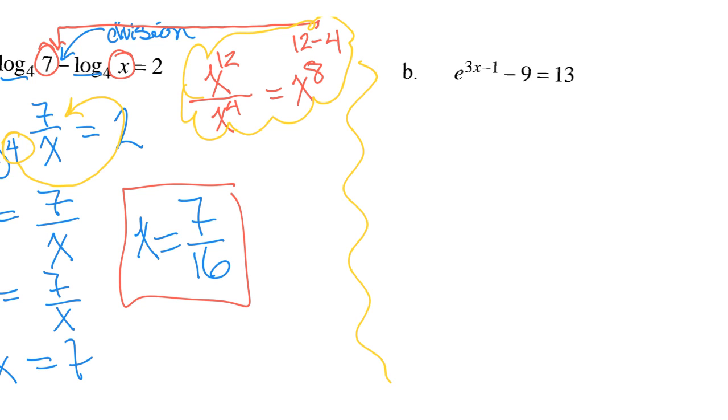So we're going to start by isolating that term with the exponent. So add 9 to both sides. So I get E to the 3x minus 1 equals 22. And I want to natural log both sides because natural log is going to undo my base of E. So let's natural log both sides.